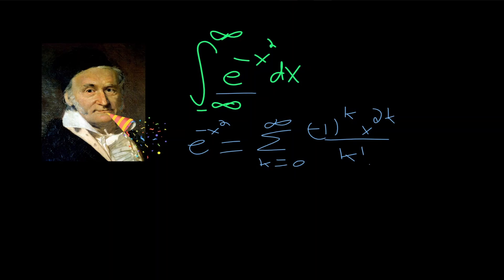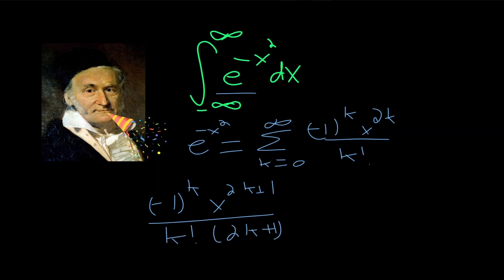If we actually integrate this — taking the indefinite integral for now — what we get is relatively simple. We still have negative 1 to the k, and then x to the 2k plus 1 by the reverse power rule, divided by k factorial times 2k plus 1, still summing from k equals 0 to infinity. But this expression still has an x in it — it's an indefinite integral, just a power series for a form of the error function.